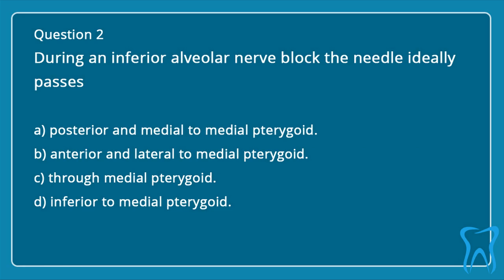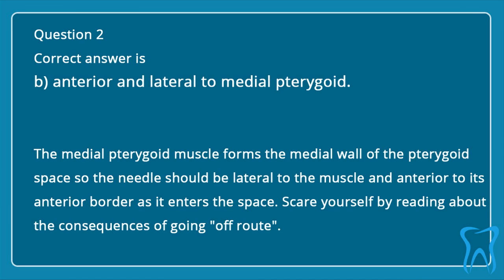Question 2. During an inferior alveolar nerve block, the needle ideally passes: A. Posterior and medial to medial pterygoid. B. Anterior and lateral to medial pterygoid. C. Through medial pterygoid. D. Inferior to medial pterygoid. The correct answer is B: anterior and lateral to medial pterygoid. The medial pterygoid muscle forms the medial wall of the pterygoid space, so the needle should be lateral to the muscle and anterior to its anterior border as it enters the space.